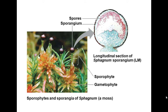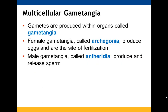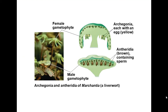Multicellular gametangia are how we get the female and male parts of flowers. The female gametangia are called archegonia — they produce eggs and are where fertilization takes place. The male gametangia are called antheridia, or anthers, and they produce the sperm.